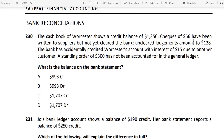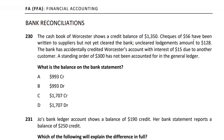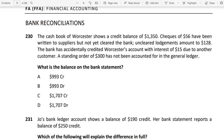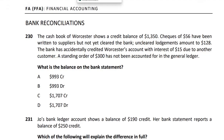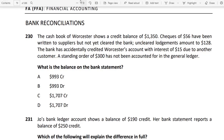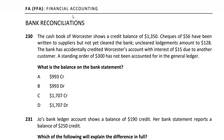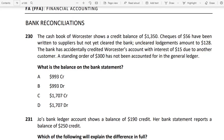The cheques have been written to suppliers but not yet credited by the bank. This is the fault of the bank and it affects the bank statement. If the bank statement shows a payment to suppliers, the bank statement will reflect that. If we are going to the bank statement, we will record it on the credit side, and the bank statement will report it accordingly.